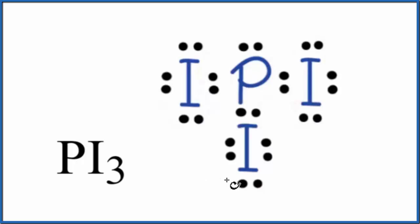The first thing we need to do when we look at molecular geometry, we need a Lewis structure. This is the Lewis structure for PI3. If you need help drawing this, there's a link in the description.